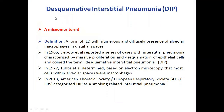Starting with the definition — as the name implies, desquamative interstitial pneumonia suggests there is a peeling or desquamation of the epithelium, which fills the alveolar spaces. However, it has since been shown that those are not epithelial cells but are actually macrophages.